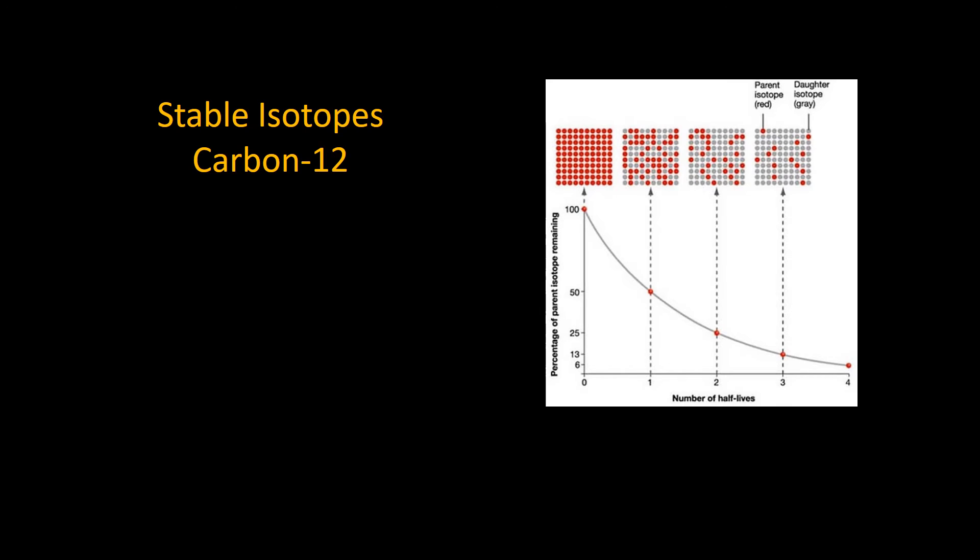Many isotopes are very stable. Carbon-12 is one of them. It's been around for the last five billion years. You have carbon atoms in you that were probably in a dinosaur a hundred million years ago, and those carbon atoms will be around long after you're gone. Carbon-12 is such a stable isotope that we don't even know how long it will be around because we've really never seen one decay.